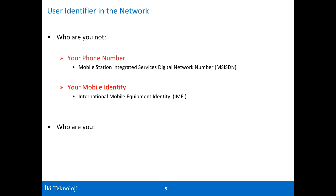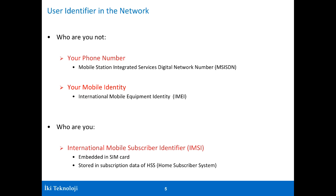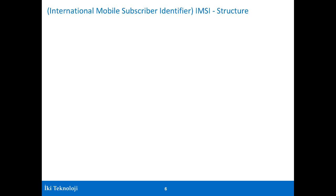How the network really knows you is by something called the IMSI — the International Mobile Subscriber Identity. This is the identity stored in your SIM card, which is why you need to have your SIM card. This identity is stored in your SIM and is put into your phone. Also, all your subscription data in the operator's network in the HSS system — a big database containing your subscription information — is based on your IMSI.